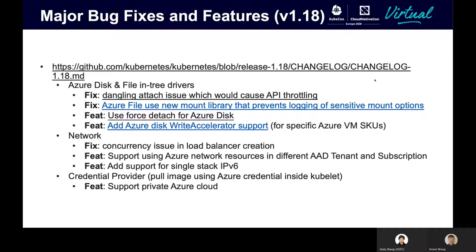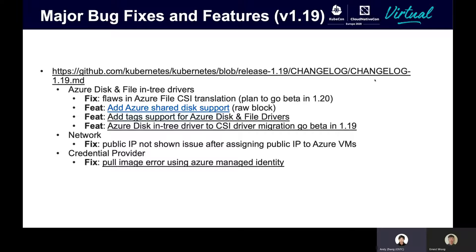In 1.19, for the Azure Disk and File in-tree drivers, we fixed some issues in the Azure File CSI translation and plan to go GA for the Azure File in-tree driver migration feature in 1.20. We also added Azure shared disk support, which allows users to attach one disk to multiple agent nodes, and added Windows support for Azure Disk and File drivers. The Azure Disk in-tree-to-CSI driver migration feature went beta in 1.19. On the network side, we fixed issues like public IP not shown after assigning the IP to Azure VMs. For the credential provider side, we fixed a bug which could cause pull image errors when using Azure managed identity.